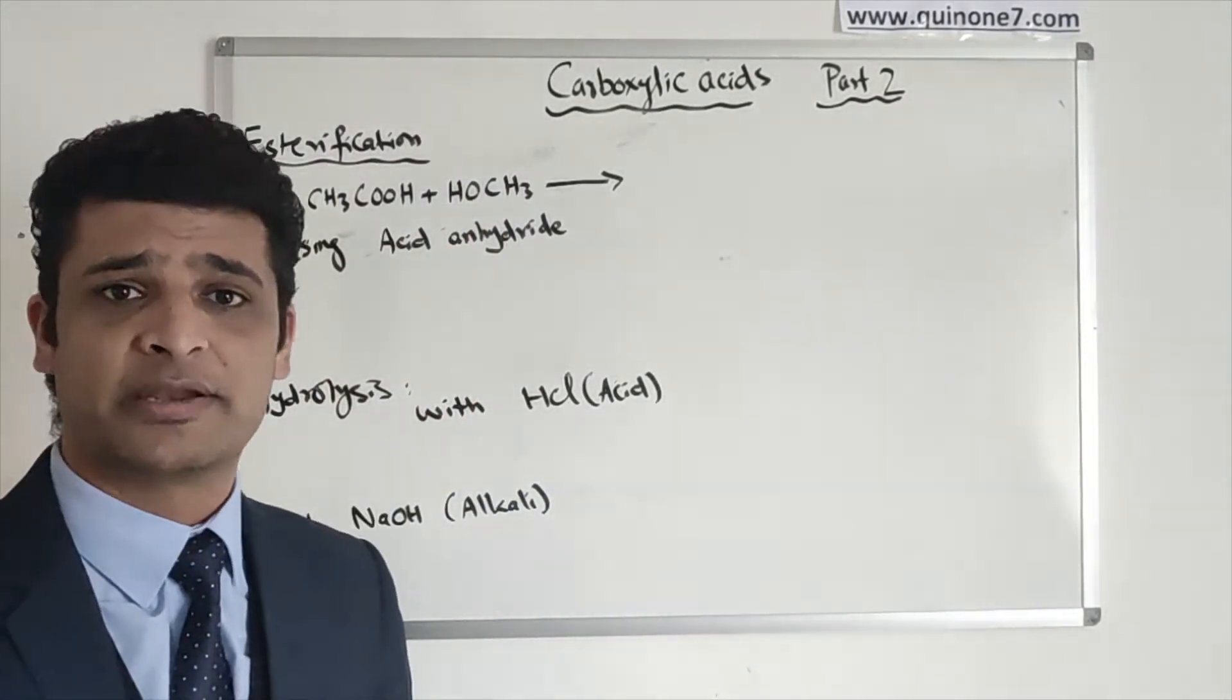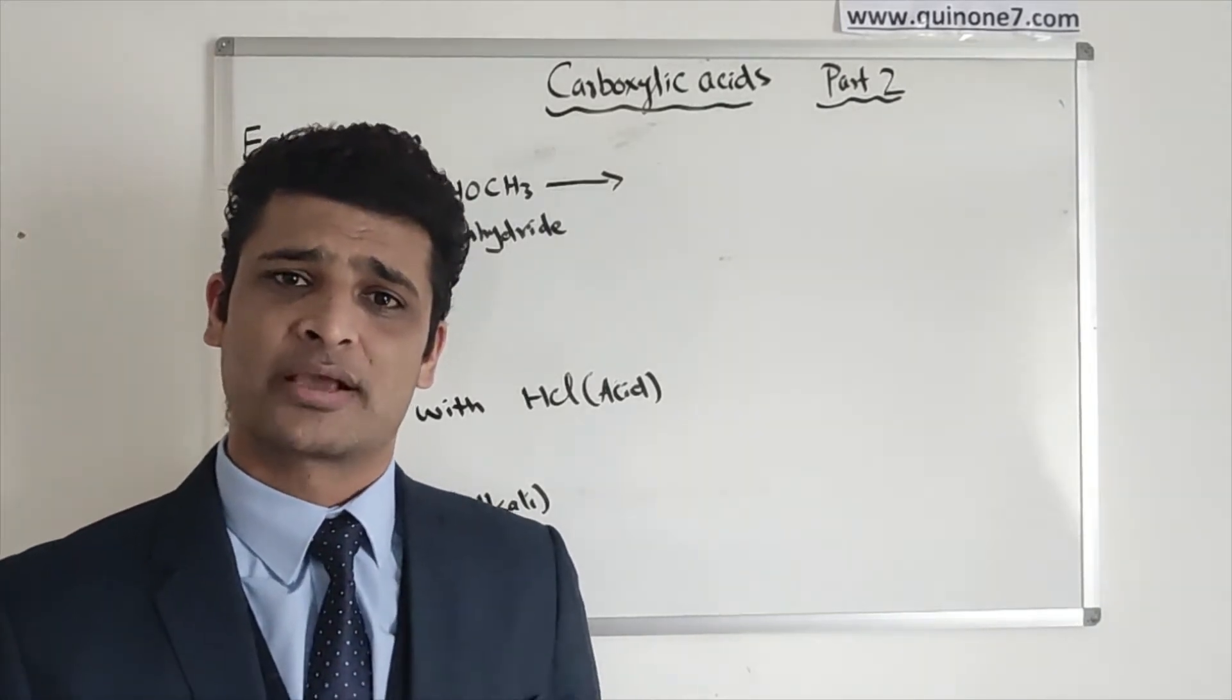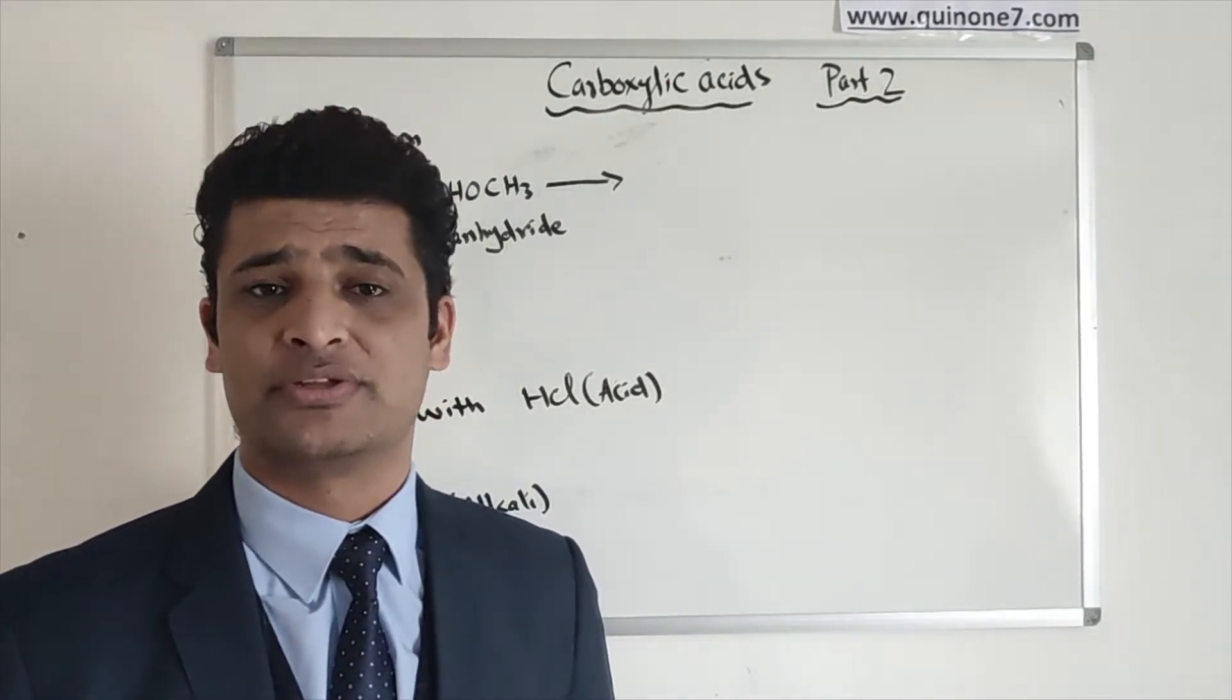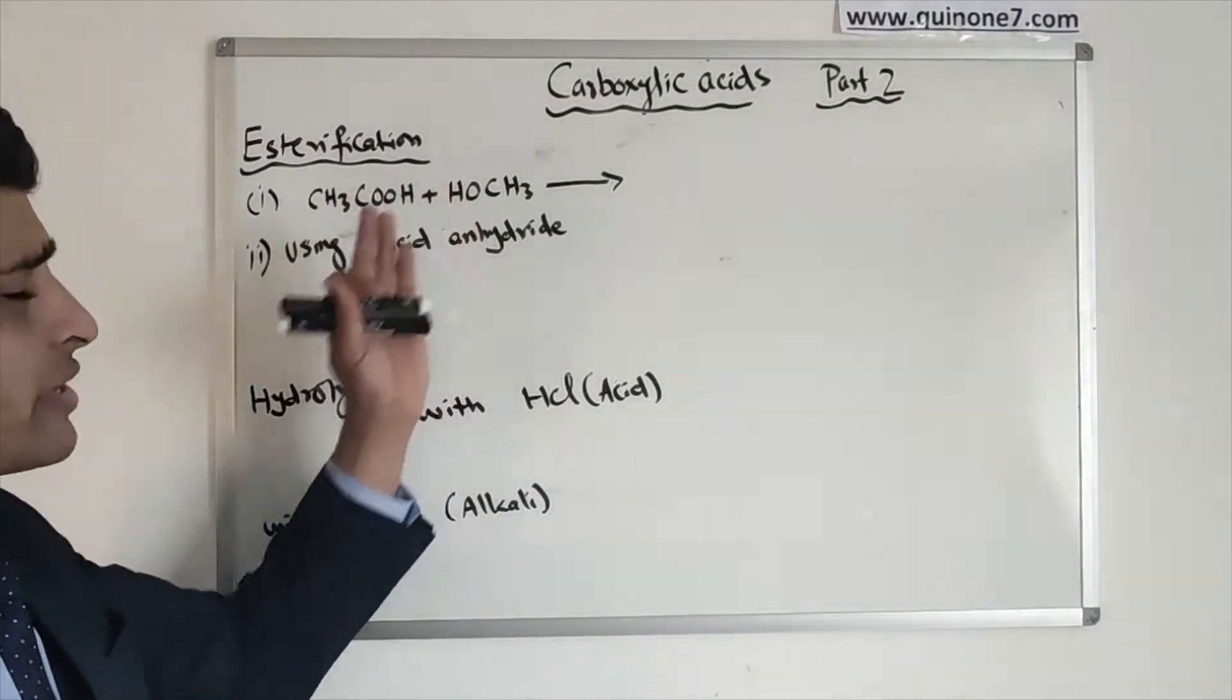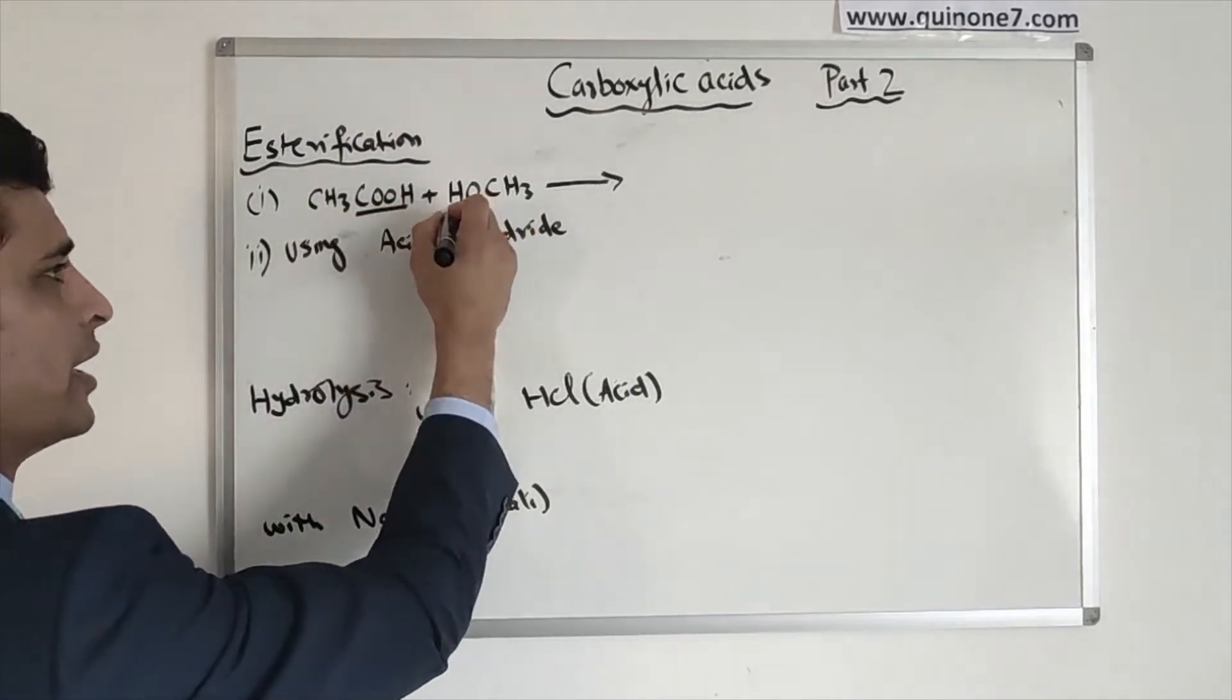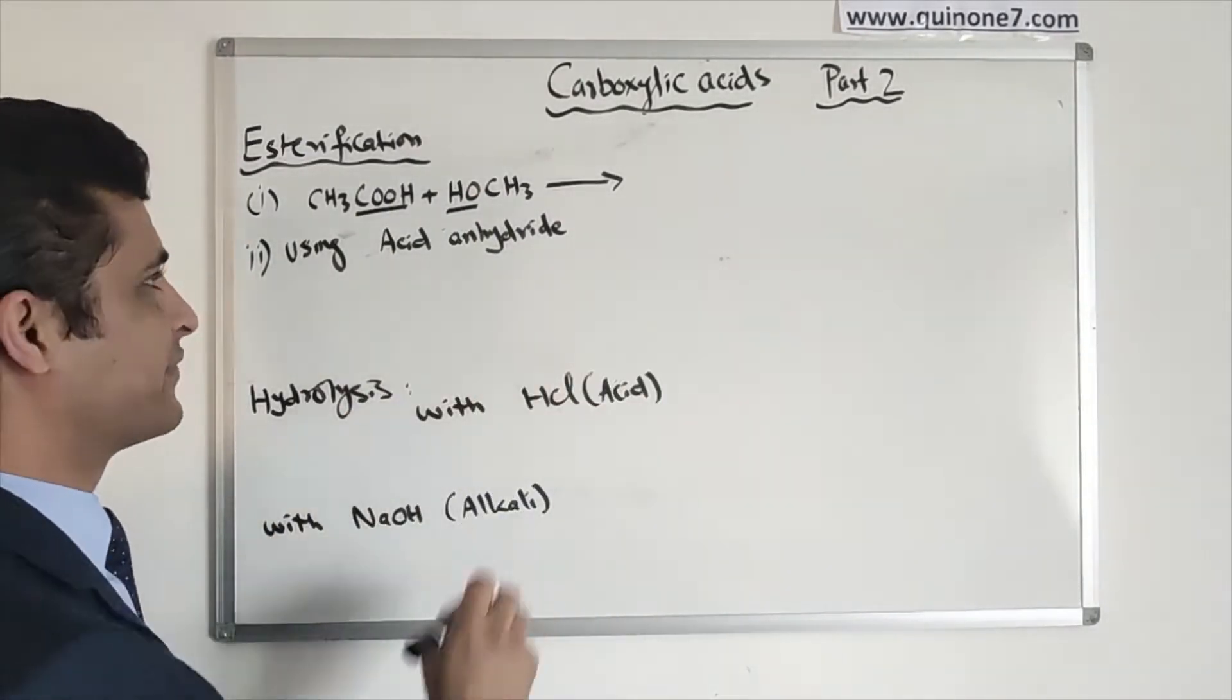Esters can be made by the reaction of carboxylic acid with alcohol which will undergo condensation and produce ester along with water. You have done that in GCSE when you looked at condensation polymerization. When you look at this example of esterification, you will look at the carboxylic acid which is the COOH group and then you have alcohol which is the OH group. They will undergo esterification.